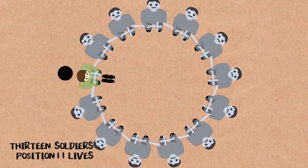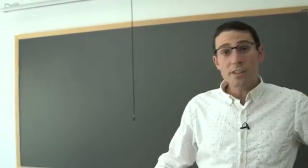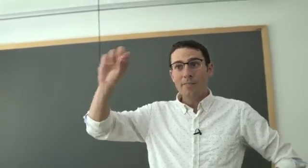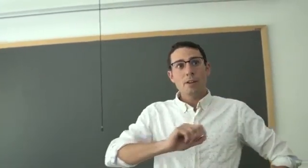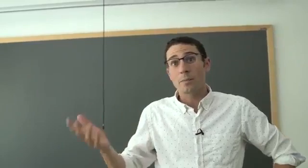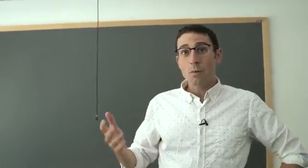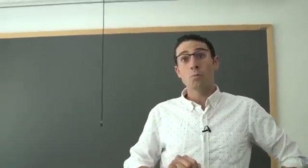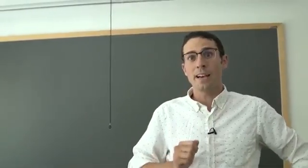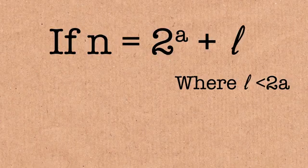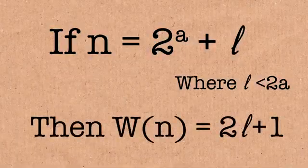And so this is really the key to the final answer, which is, if you've written your number as 2 to the a plus l, after l steps, whosever turn it is, is going to win. Because it's going to be their turn and there will be a power of 2 left. And so the winning seat will be 2l plus 1. If you write it in this way, because that's whose turn it will be after l steps. The theorem, or the claim, is that if you've written n in this way. So if n is 2 to the a plus l, where l is less than 2 to the a. It has to be strictly smaller. So in other words, 2 to the a is the biggest power that sat inside of n. Then, the winning seat is going to be 2l plus 1.